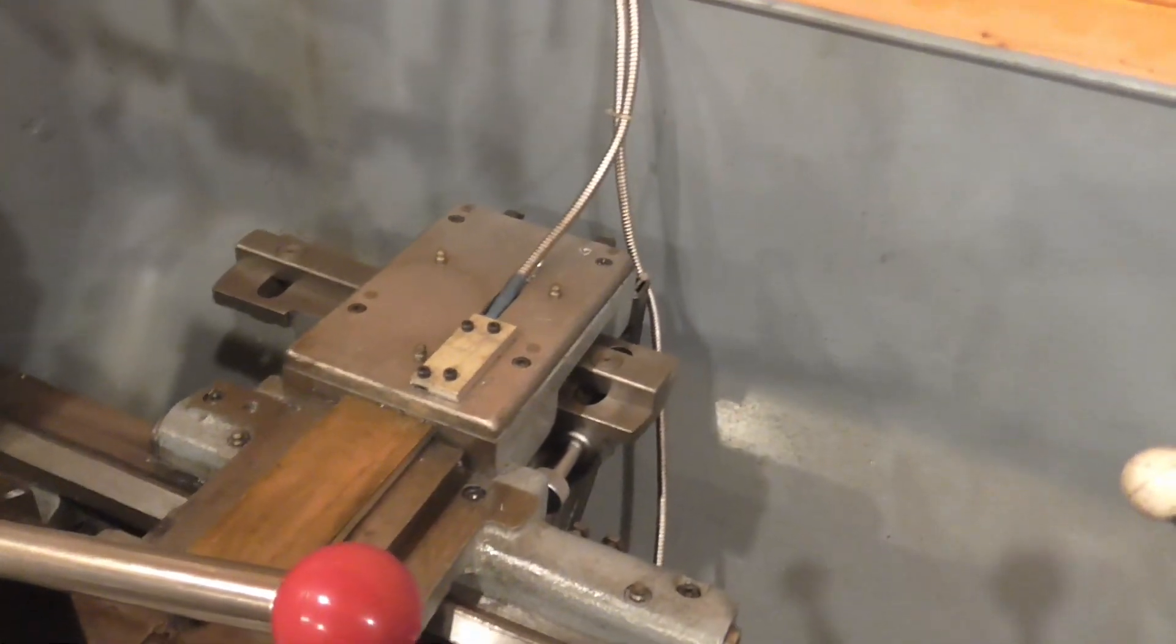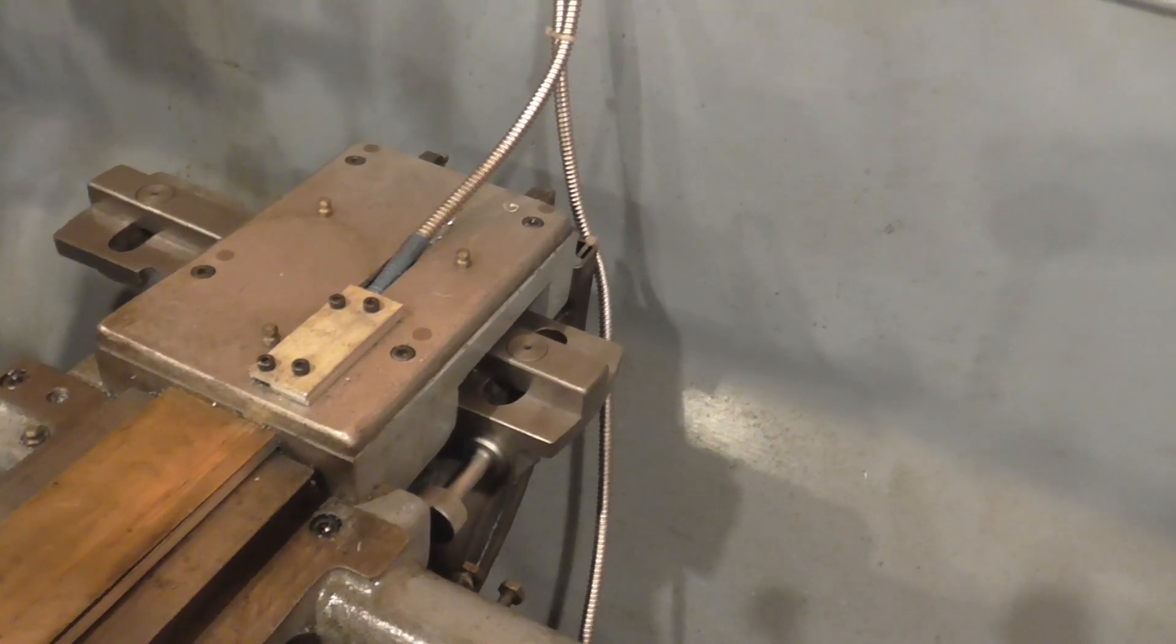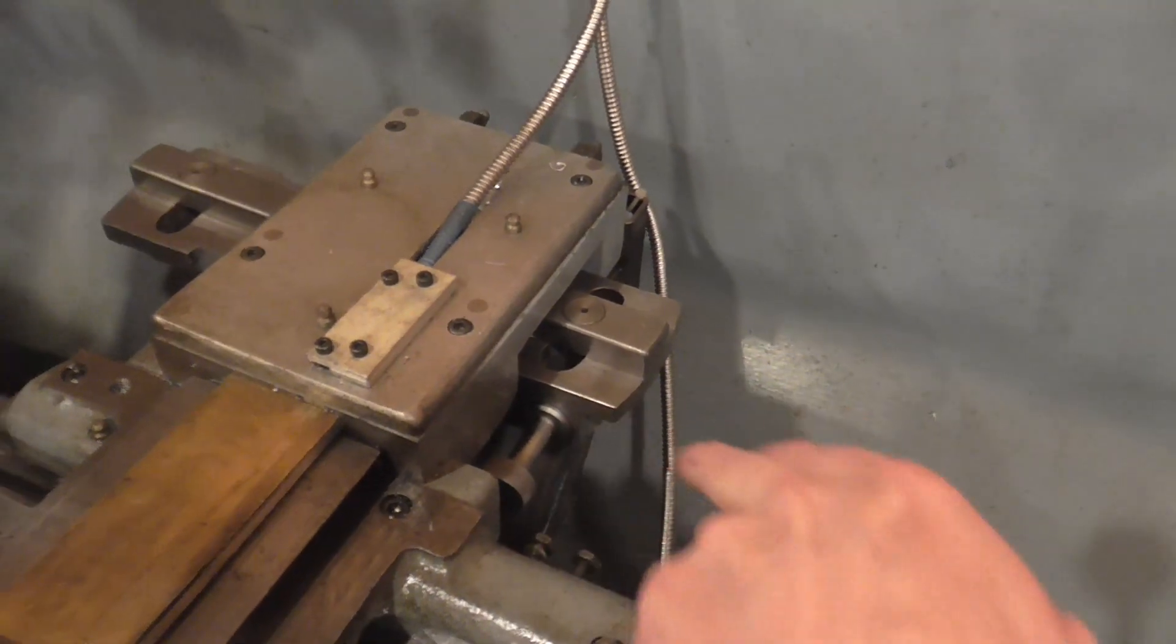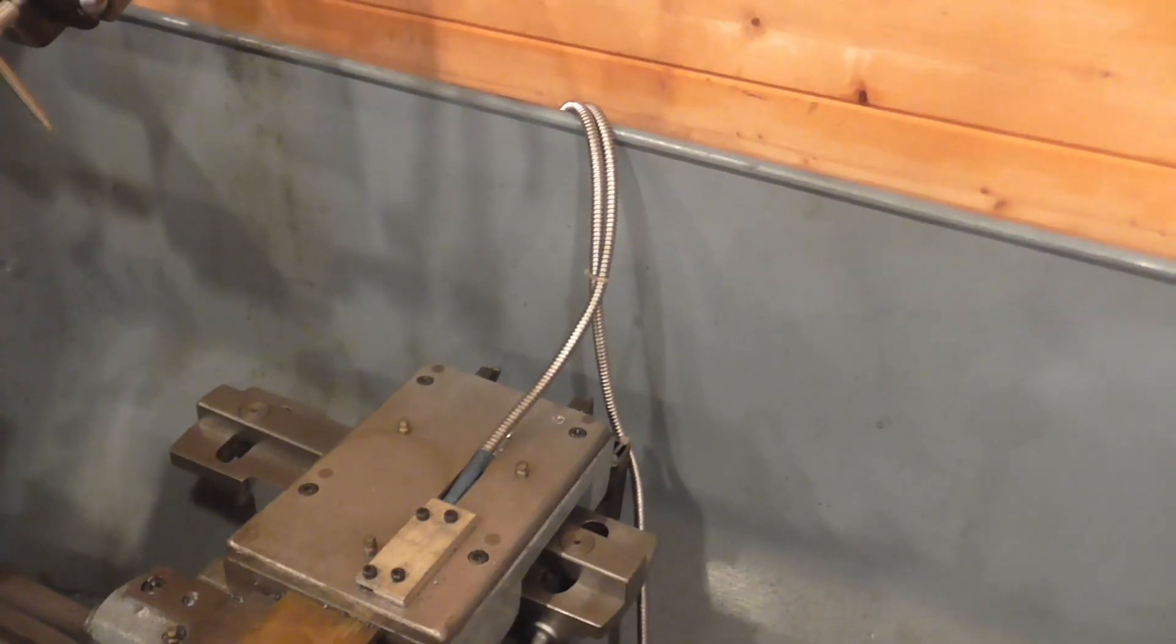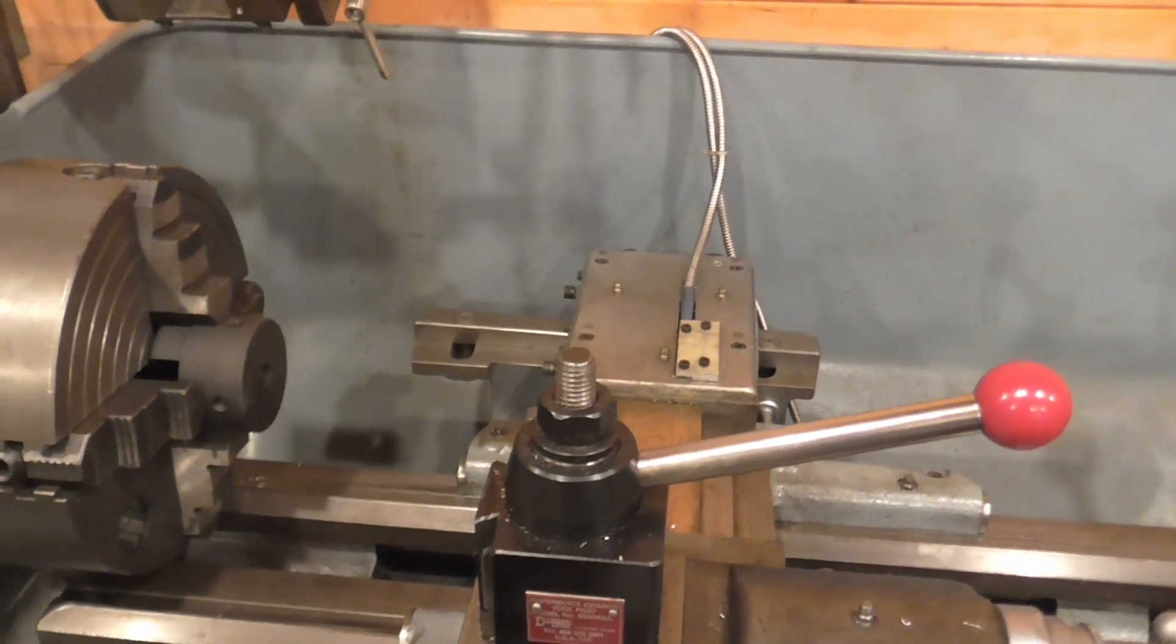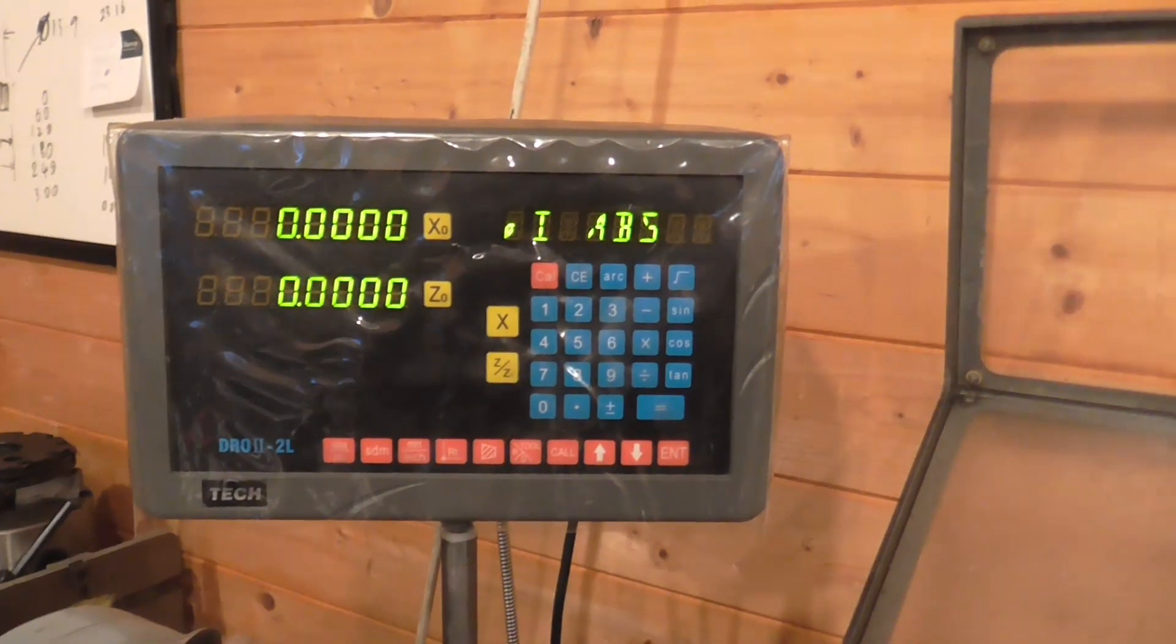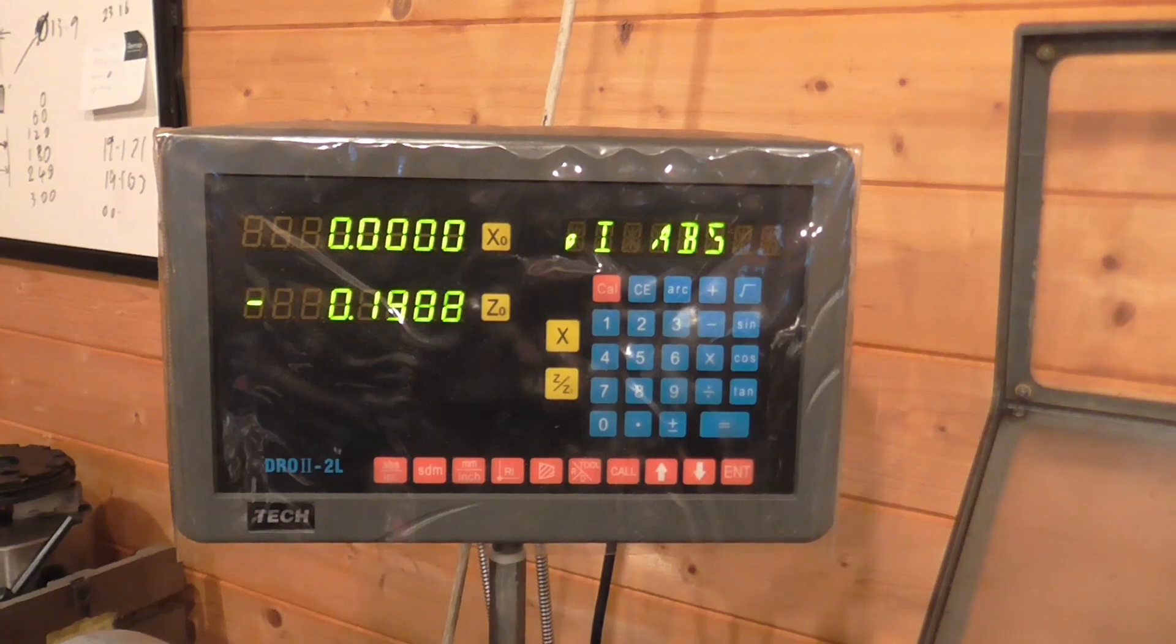So I've got the carriage as far back as it goes on the taper turning attachment with the adjuster in place. This is due to the way that the motion is transferred down to the Z-axis DRO scale. I don't use the attachment very often so it's a minor inconvenience. So what I shall do is move the carriage towards the chuck.